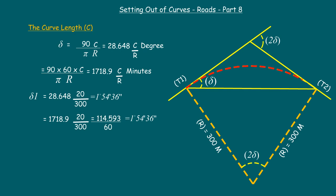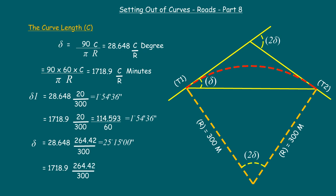Now let us cross-check delta using the full curve length of 264.42 meters with radius 300 meters. Using the degrees formula: 28.648 into 264.42 divided by 300 gives 25 degrees 15 minutes. Using the minutes formula: 1718.9 into 264.42 divided by 300 gives 1515.13 minutes; dividing by 60 gives 25 degrees 15 minutes. This equals theta by 2 of our original curve design, confirming that the design and the setting out are correct.